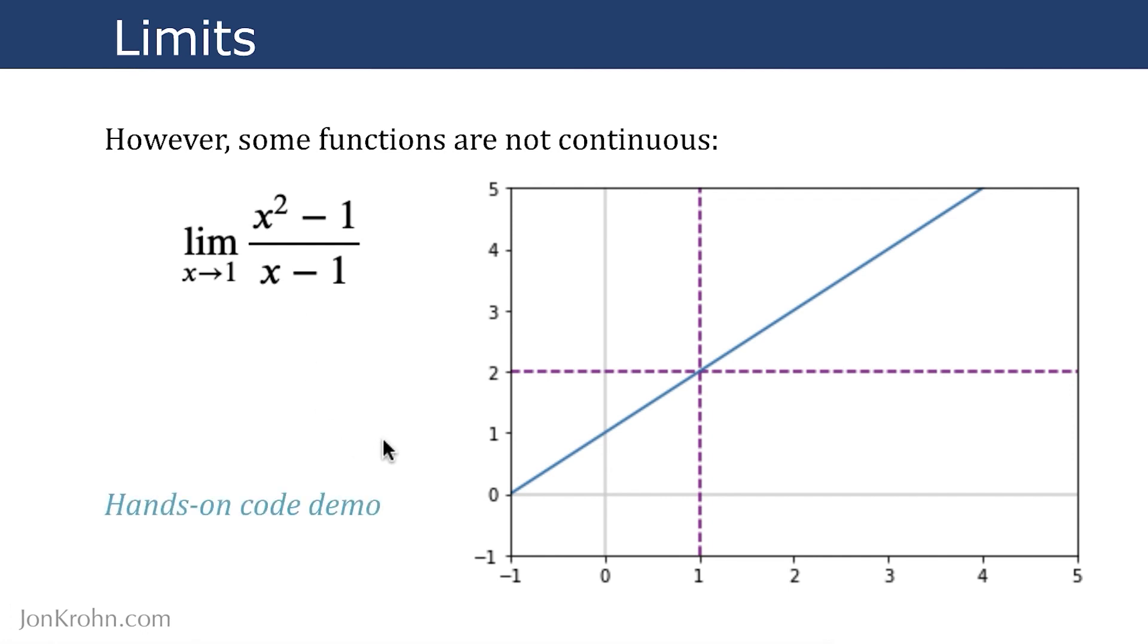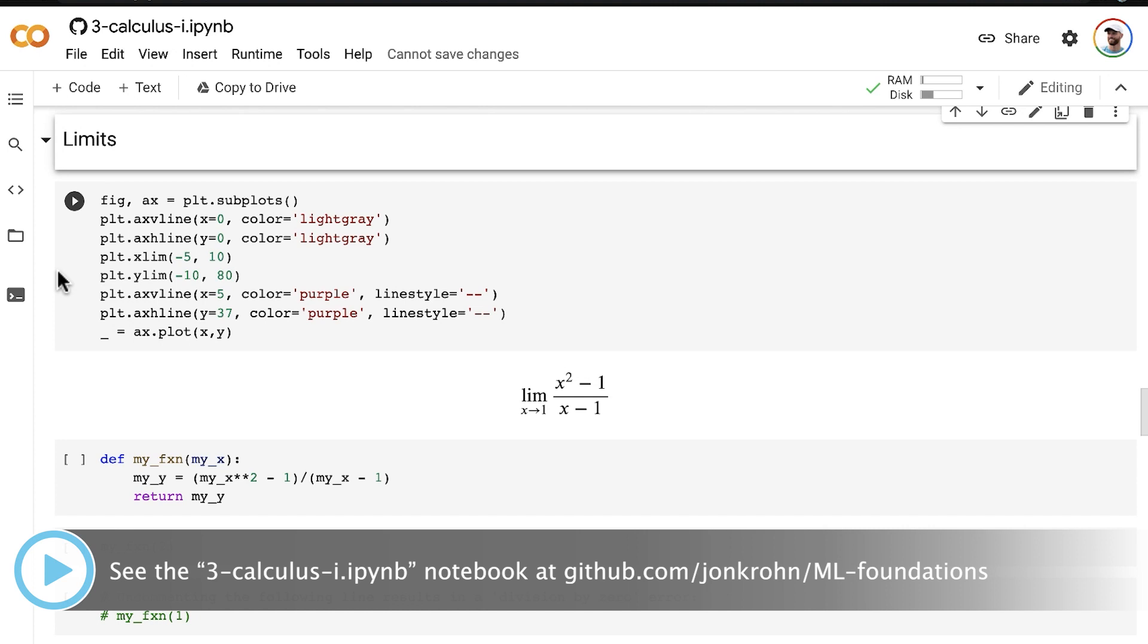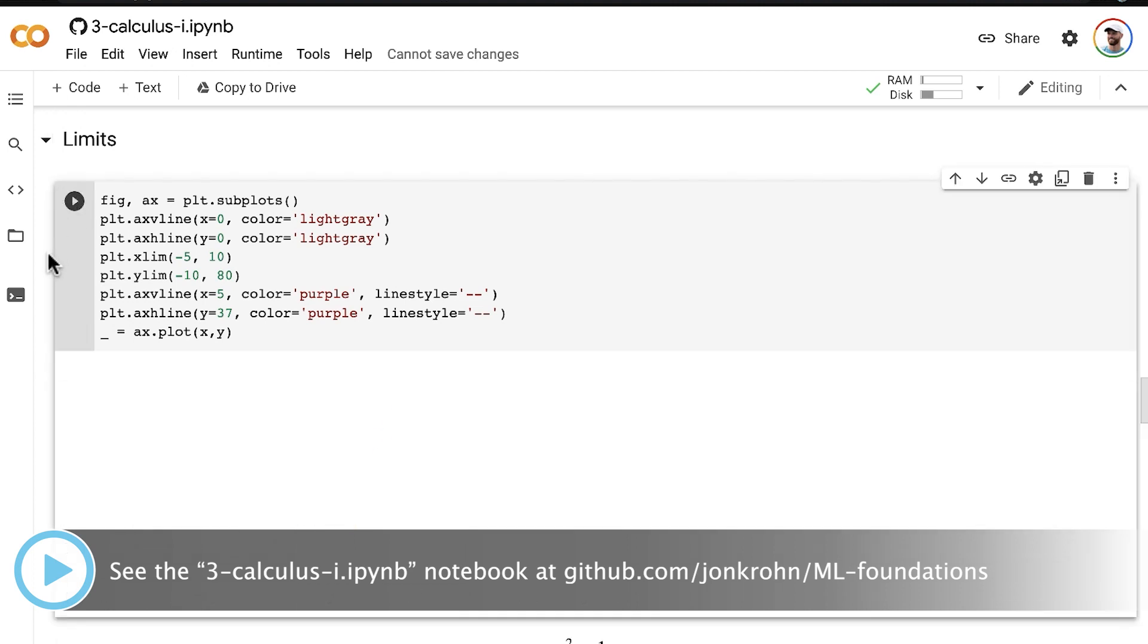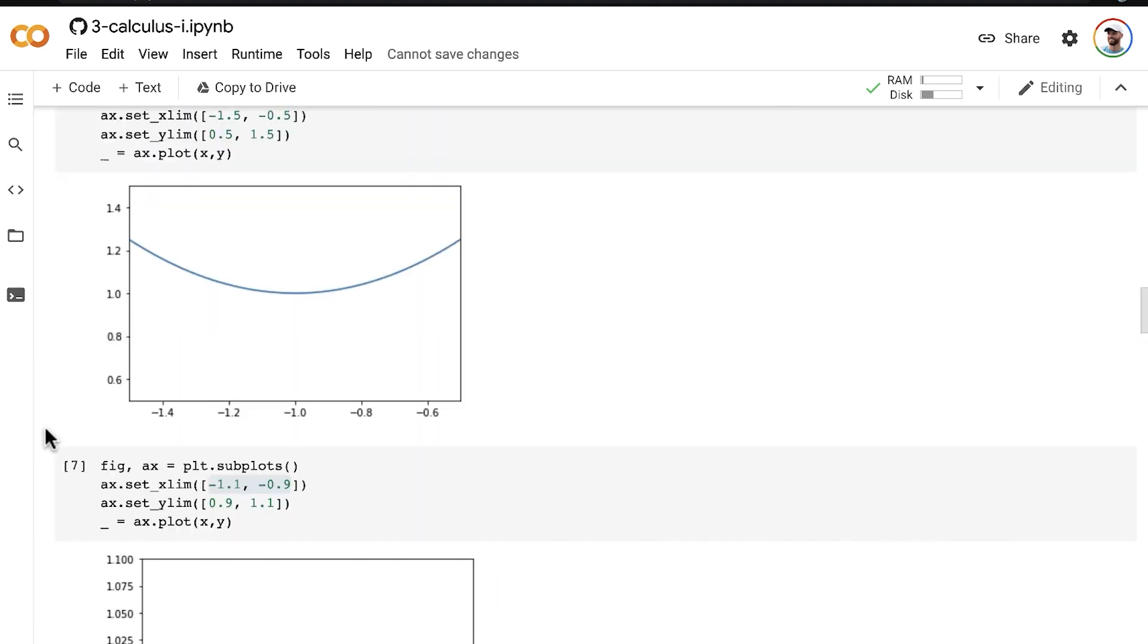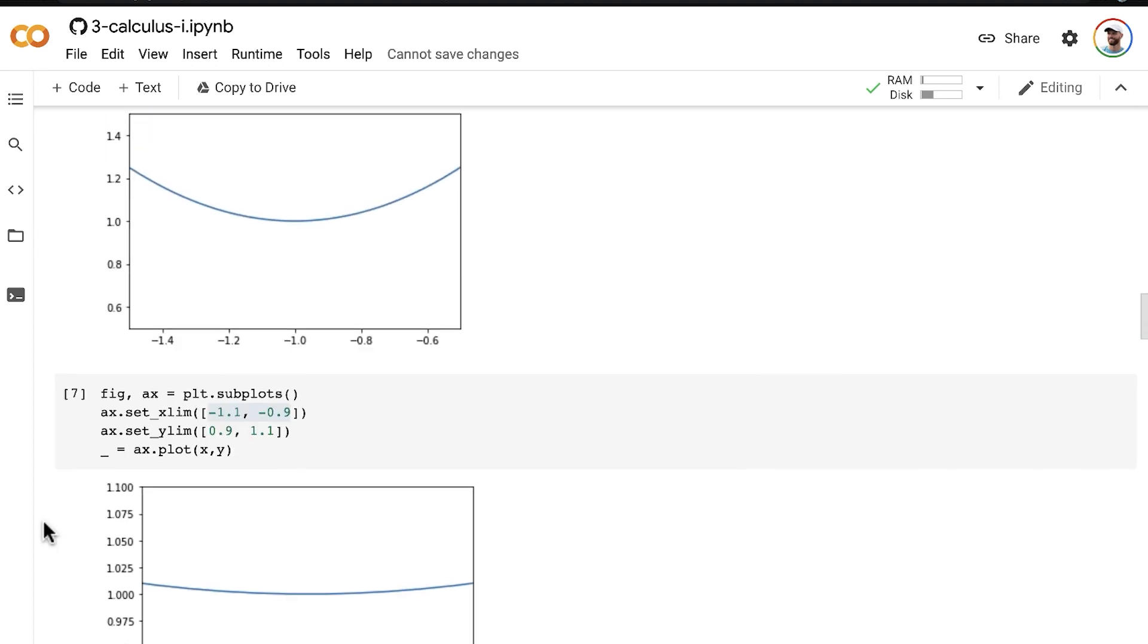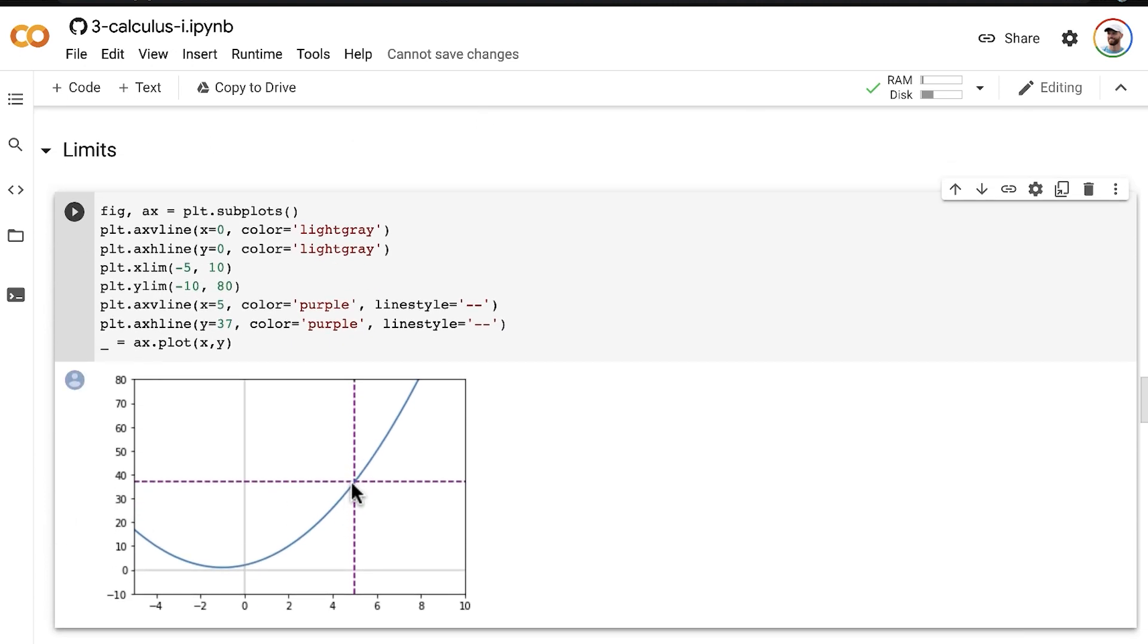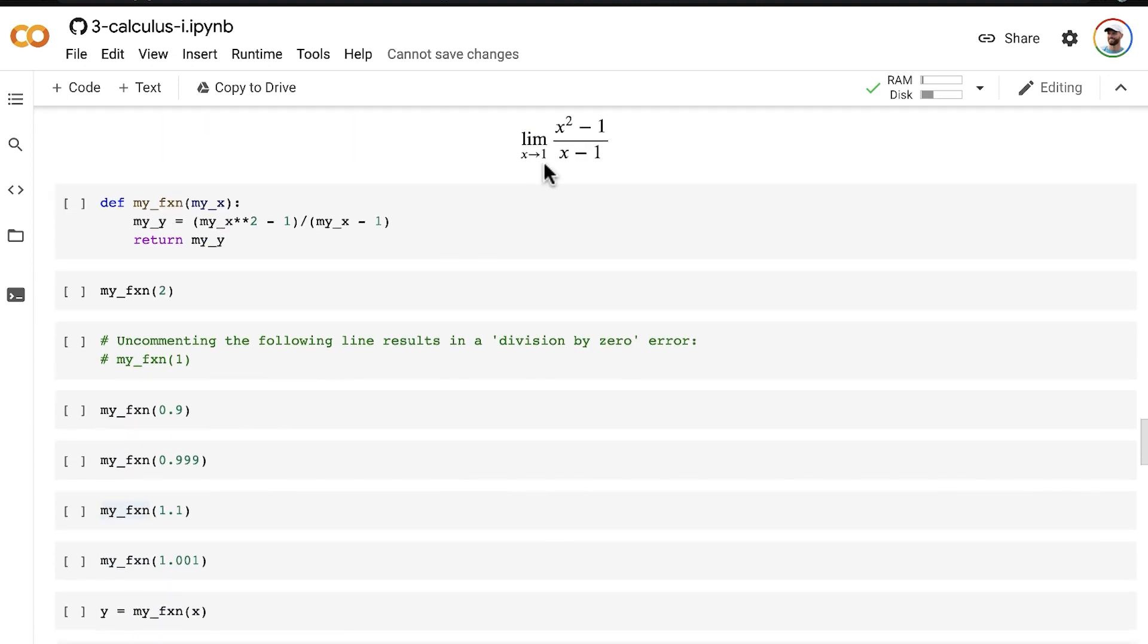So what can we do? Let's jump to a hands-on code demo. Here we are in the Calculus 1 Jupyter notebook, in the limits section. The first cell here is just to plot out the plot from the preceding slide. This is that function we've been working with, y = x² + 2x + 2. Here's the code if you were interested in plotting that out.